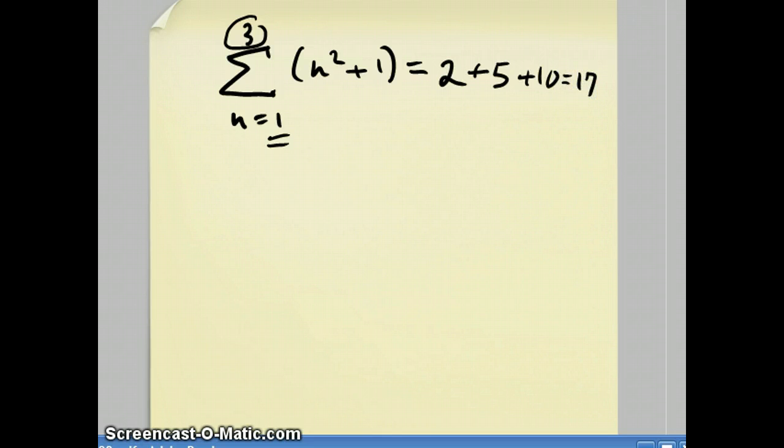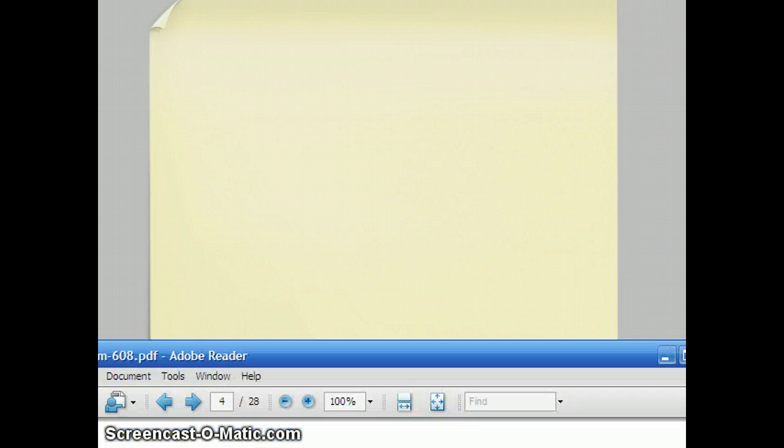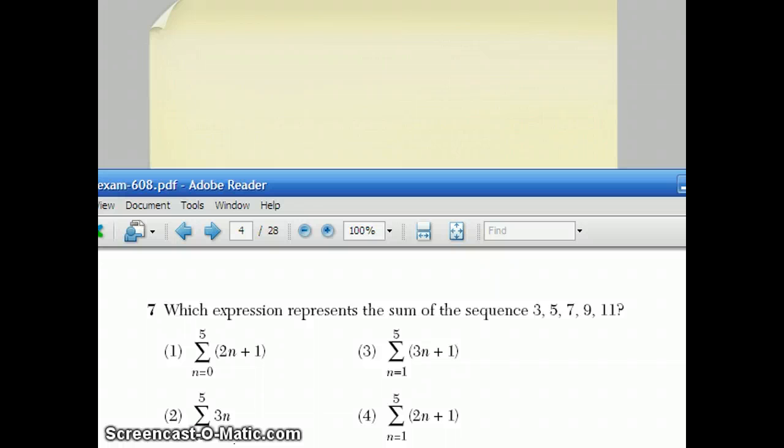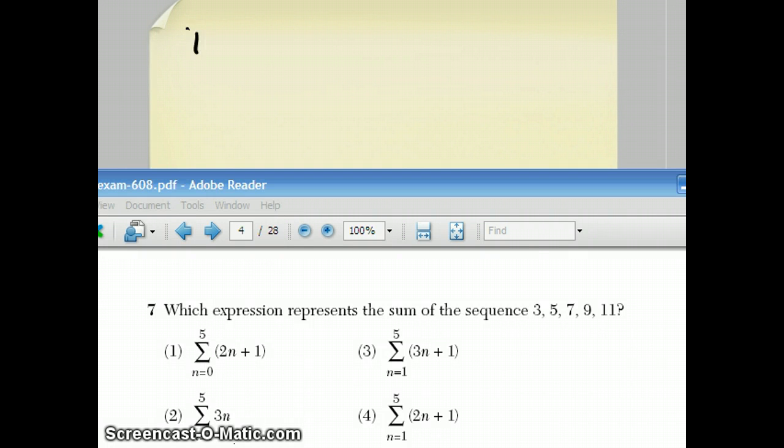Now, sometimes they ask you to go backwards, like in this case, where they tell you like 2 plus 5 plus 10, and they want you to come up with this shorthand for it. Well, in this question, let's take a look at the different choices. Choice number 1 says 2n plus 1, as n goes from 0 to 5. So if I were to expand out choice 1, I would first plug 0 in.